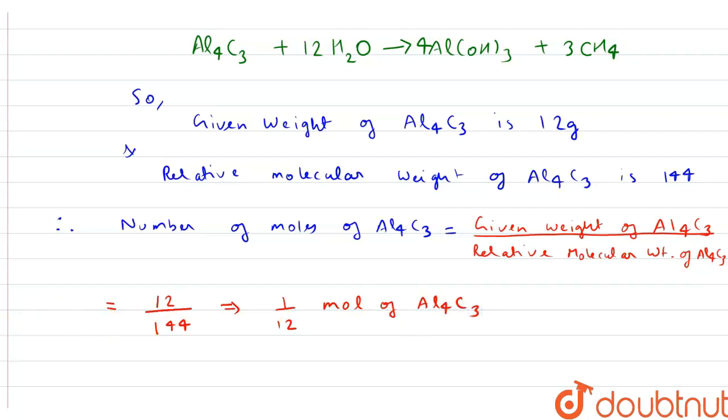Now according to the above balanced reaction, 1 mol of Al4C3 forms 3 mol of methane. So we can write, since 1 mol of Al4C3 forms 3 mol of methane, that is CH4.